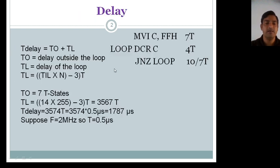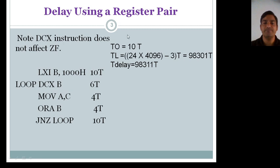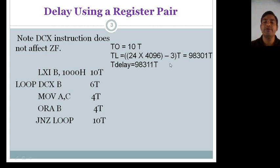Applying the same formula: T_outside = 10T. Inside the loop: 6 + 4 + 4 + 10 = 24T. N = 1000H in decimal = 4096. So T_L = 24 × (4096 − 3) = 24 × 4093 = 98232T. Total time delay = 98232 + 10 = approximately 98311T. With T = 0.5 microseconds at 2 MHz, you can calculate the total delay.